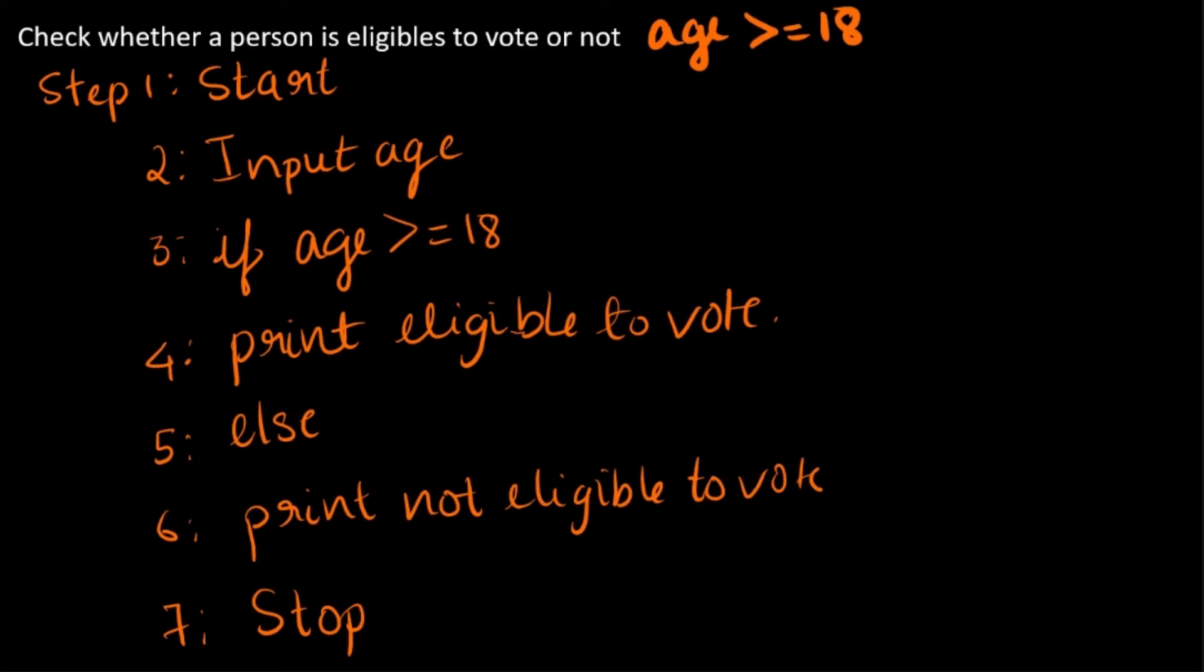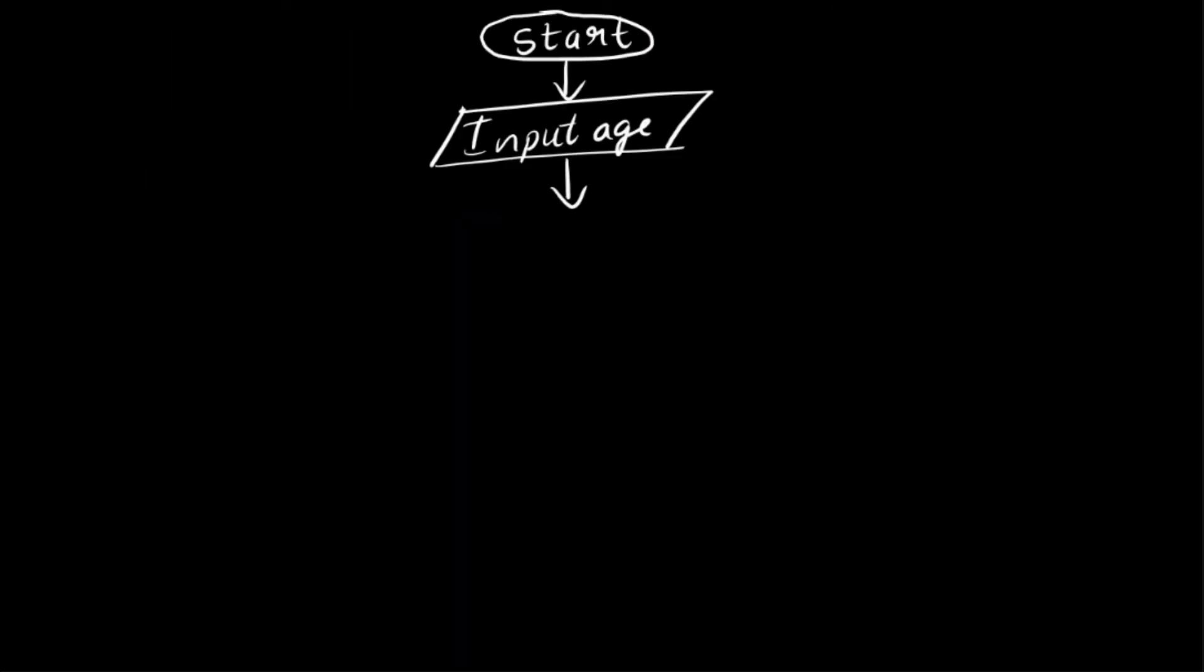Then we have a decision here. If this is the case, that's a decision. The decision is in this diamond shape. If age greater than or equal to 18.